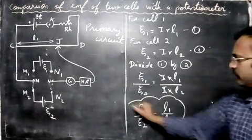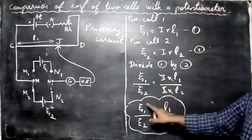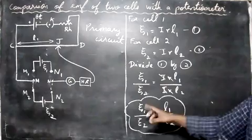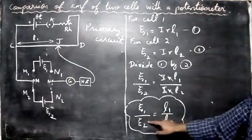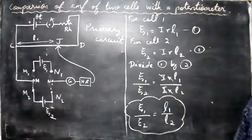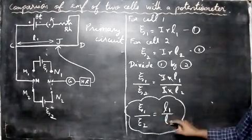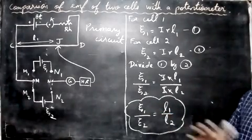So if you want to find the EMF of the first cell, then what you can do is cross multiply - E2 comes here. You must know E2, L1, and L2, then you can find the EMF of the first cell. Or you can divide the two cells.